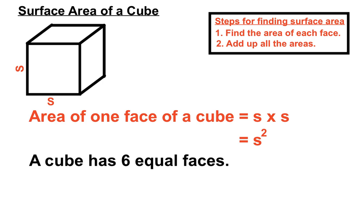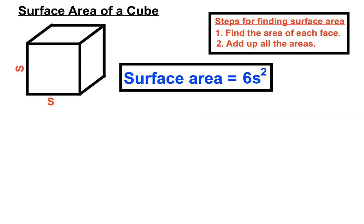Now we know that a cube has six equal faces, so the surface area of the whole cube would be equal to six times S squared. So we'll use that for our formula for the surface area of a cube, six times whatever the side length is, squared.